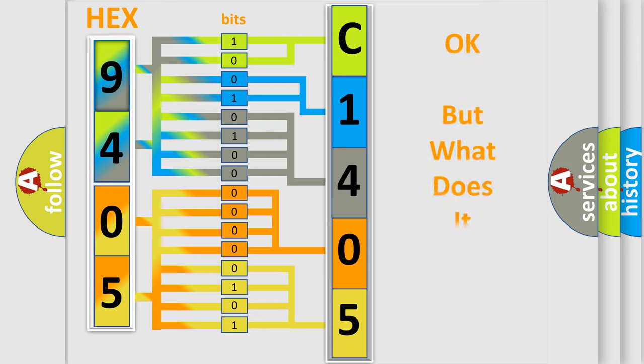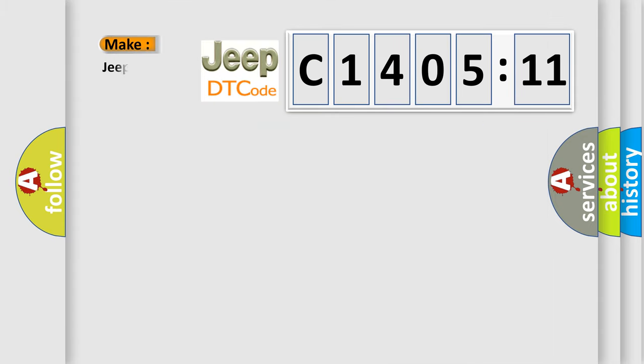We now know in what way the diagnostic tool translates the received information into a more comprehensible format. The number itself does not make sense to us if we cannot assign information about what it actually expresses. So, what does the diagnostic trouble code C140511 interpret specifically for Jeep car manufacturers?